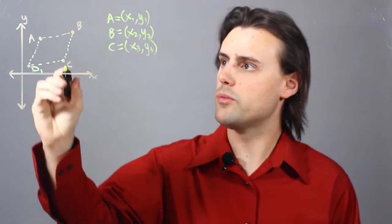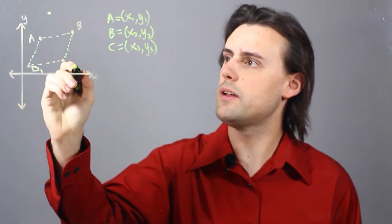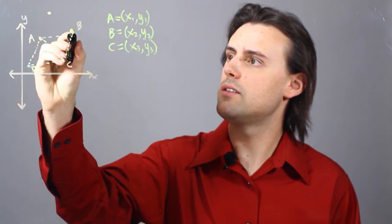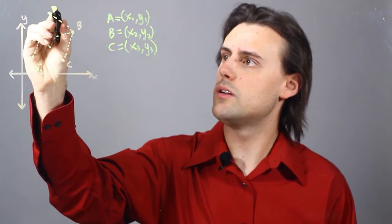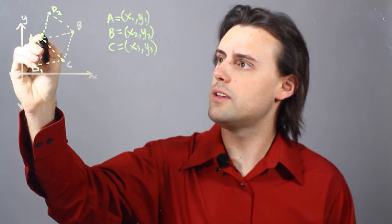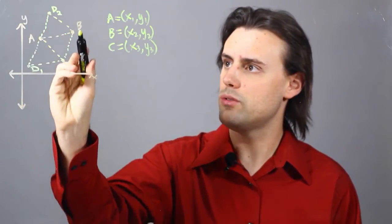Another possible parallelogram is if I have the fourth point up here, where this length AC is equal to this length from B to, let's say, D2. And then the length and orientation of AD2 is equal to CB.